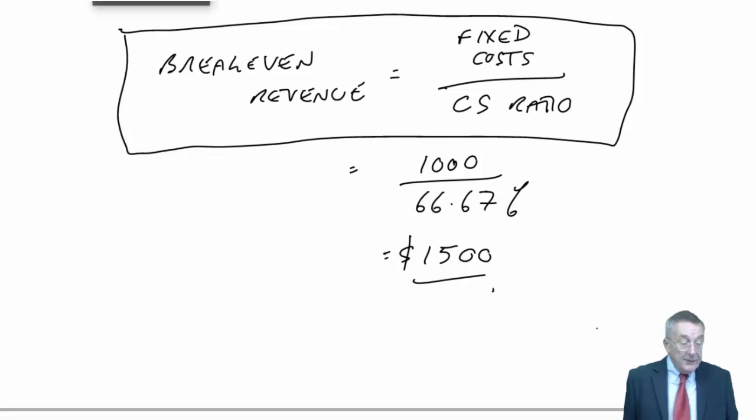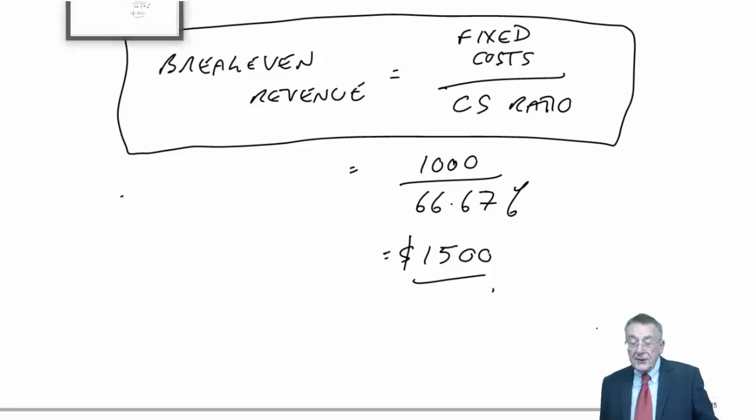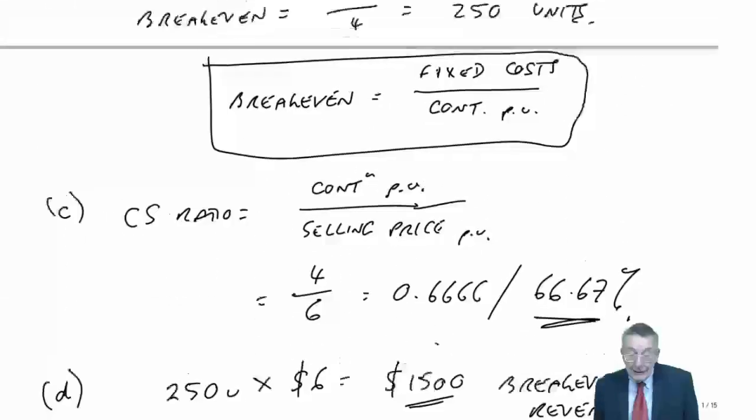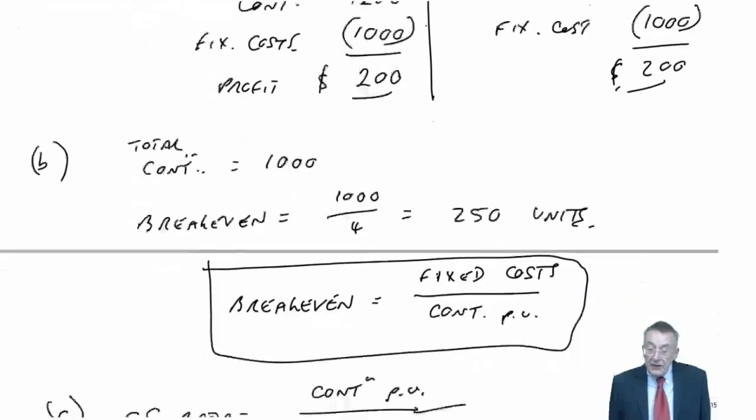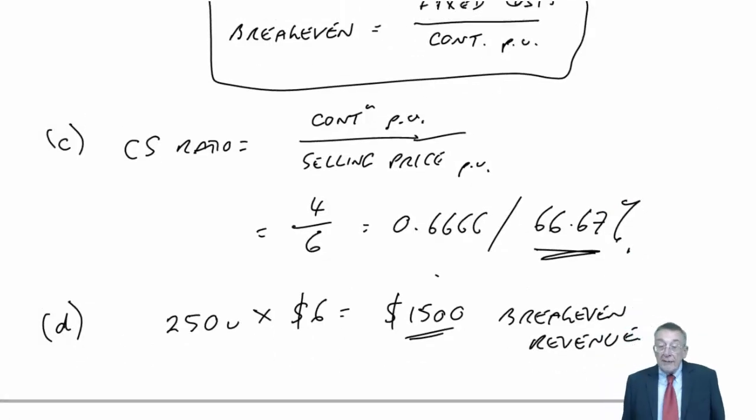The next bit refers to margin of safety. If you look back to exercise one, we are expecting to sell 300 units. We're budgeting on a profit of $200. We're well aware that our estimates may be wrong, we may sell more or less. But we're still going to be profitable provided we sell at least 250 units and our revenue is at least $1,500.